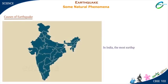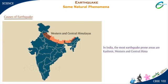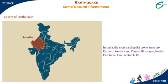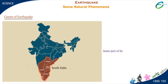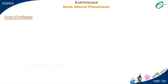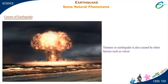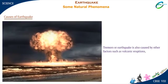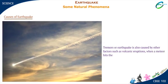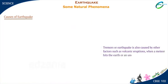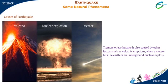In India, the most earthquake-prone areas are Kashmir, Western and Central Himalayas, North East India, Rann of Kutch, Rajasthan, and the Indo-Gangetic Plain. Some parts of South India are also a threatened zone. Tremors or earthquakes are also caused by other factors such as volcanic eruptions, when a meteor hits the earth, or an underground nuclear explosion.